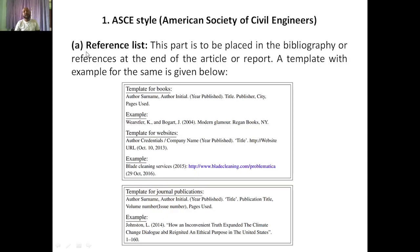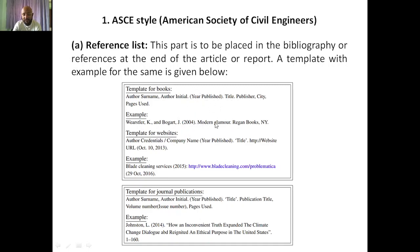For ASCE style, the reference list is placed in the bibliography or references section at the end of the article or report. A template with an example is given for books. If you want to cite a book, you write the author name first — here, Wastler K and Bogat are the two authors. The surname is mentioned first, followed by the initial — so surname then initial for each author. Next, within brackets, the year published, that is 2004. Next, the title of the book — 'Modern Glamour'. Next, the publisher — Reagan Books.